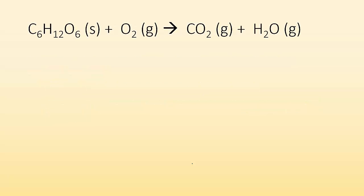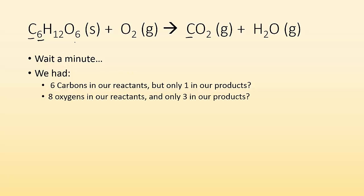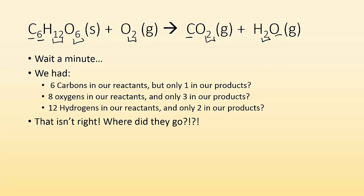If we take a look at this chemical equation right here, we got C6H12O6, we got O2, giving us CO2 and H2O. We had originally six carbons in our reactants, but we only end up with one in our product. We got six carbons and only one carbon in our product — where did the other carbons go? We had eight oxygens in our reactants — six here and two there — and we only have three in our products. And hydrogens: we had 12 hydrogen atoms and now we only got two. Where did everything go? This isn't right. We need to balance this equation.